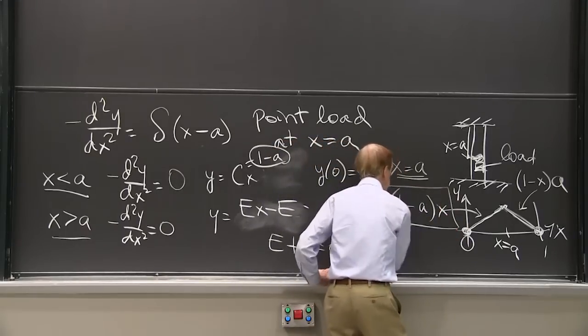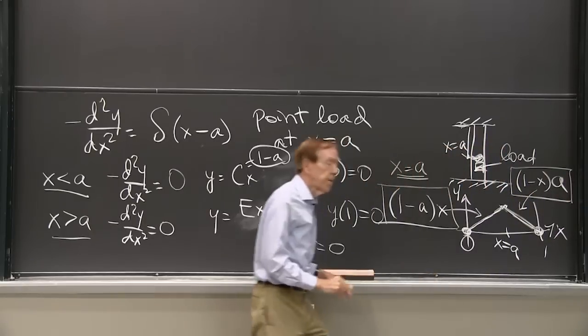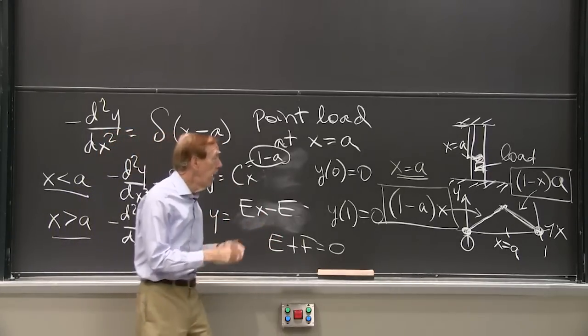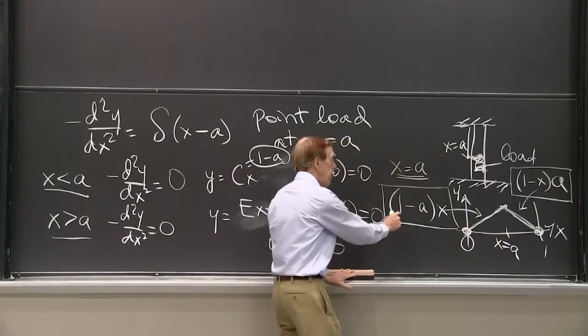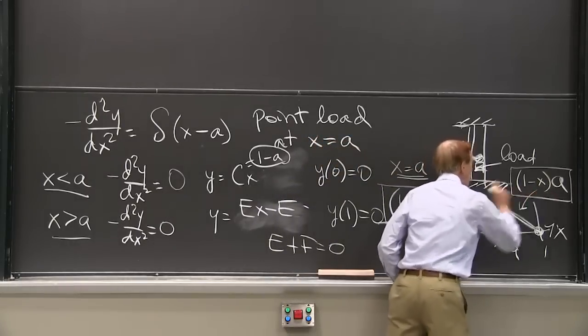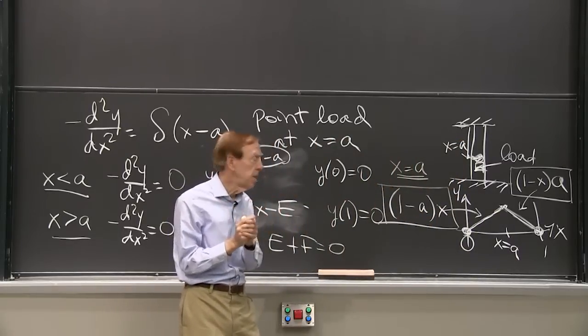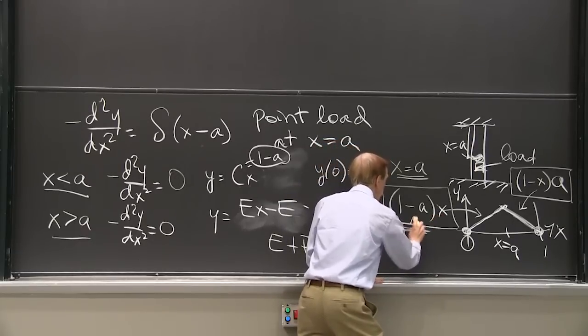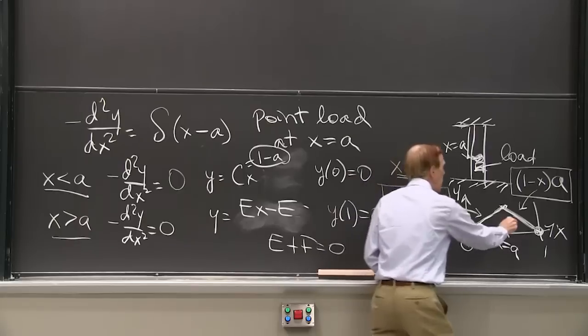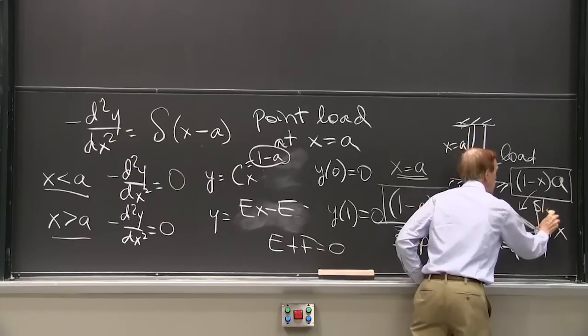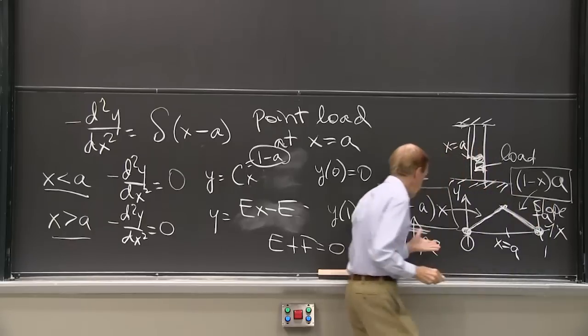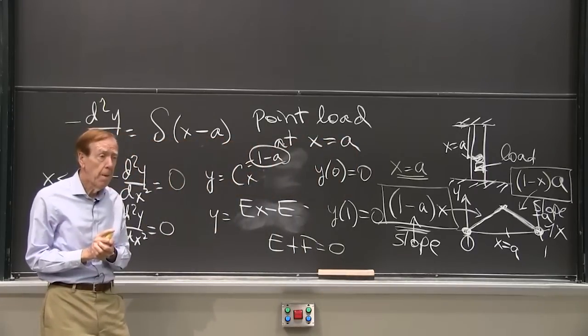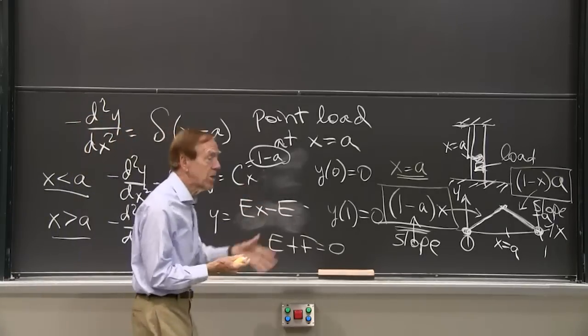So there is my solution. Because of the delta function, I need sort of like a two part solution to the left of the delta function, the point load, and to the right of the point load. And then we could check that at the load, x equal a, this is 1 minus a times a. This is 1 minus a times a. They do meet. And now comes this mysterious fourth condition about the slopes. The slope drops by 1. Here the slope is 1 minus a. That's the 1 minus a is the slope there. And here the slope is minus a. The derivative is minus a. So it was 1 minus a. The 1 dropped away and left me with minus a. That's what the solution looks like.